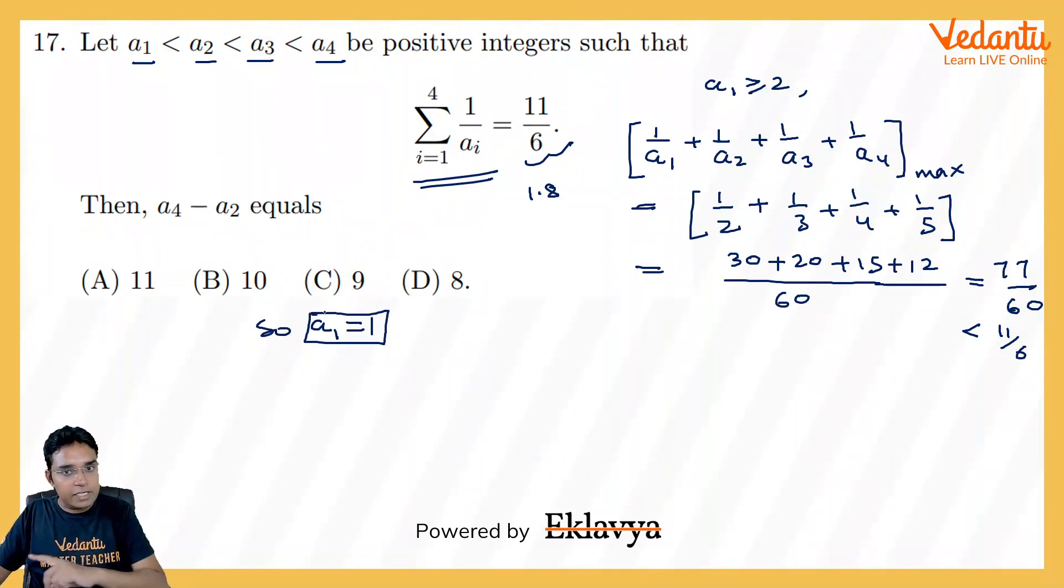I will tell you one objective method also, but before that let us understand this properly. So then 1 upon a2 plus 1 upon a3 plus 1 upon a4 will be equal to, I will be subtracting 1 that side, so it will become 5 by 6. Now same way what I am going to do, now because my a2 is greater than 1, so it can be either 2 or 3 or so on. So let us explore if it can be greater than or equal to 3 or not.